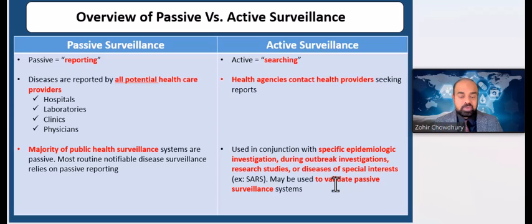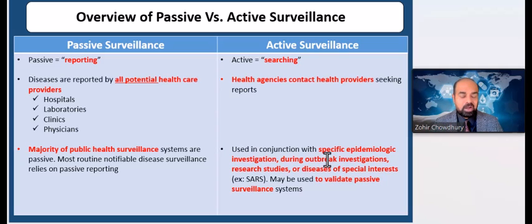Active surveillance is also useful when it is important to identify all cases. For example, between 2002 and 2005, active surveillance was used to detect adverse effects associated with the smallpox vaccine. Active surveillance is also often used to validate the data in passive reporting to ensure more complete reporting of conditions.